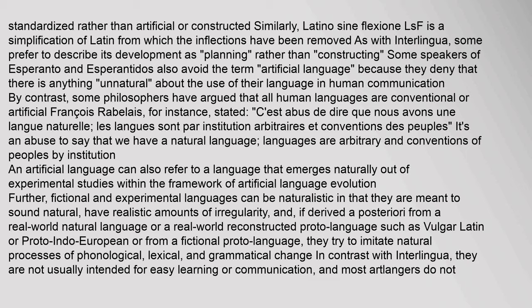Some speakers of Esperanto also avoid the term 'artificial language' because they deny there is anything unnatural about its use in human communication. By contrast, some philosophers have argued that all human languages are conventional or artificial. François Rabelais stated: 'It's an abuse to say that we have a natural language; languages are arbitrary and conventions of peoples by institution.' An artificial language can also refer to a language that emerges naturally out of experimental studies within the framework of artificial language evolution.